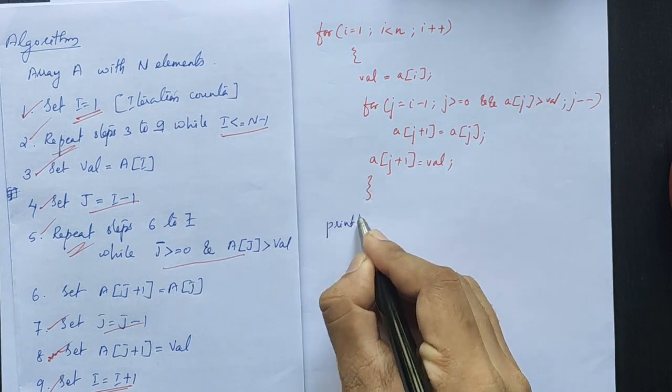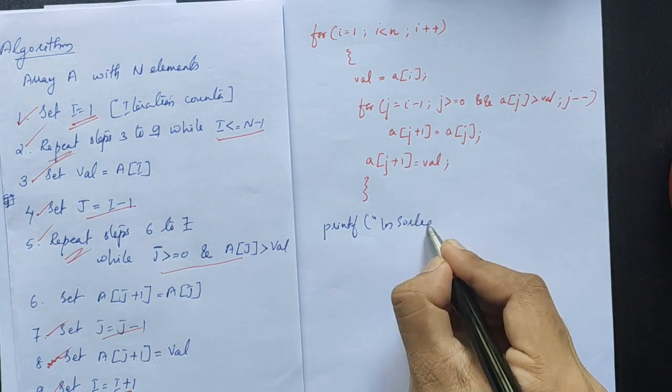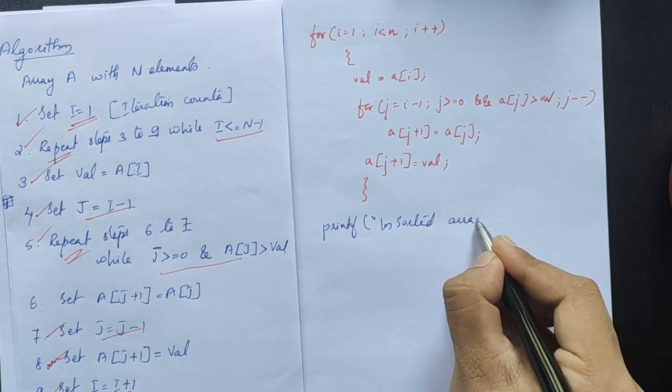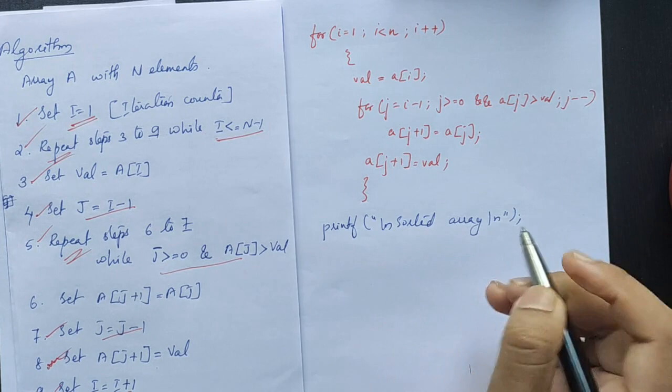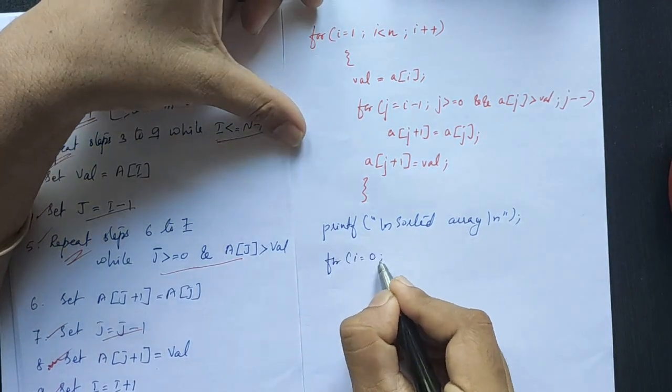Finally, print the sorted array elements with the heading 'sorted array'.